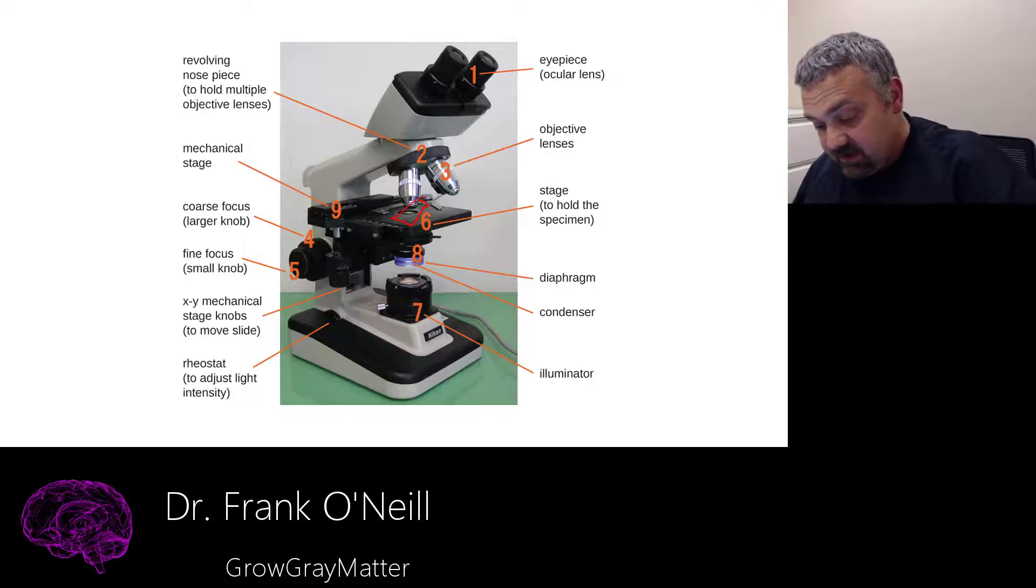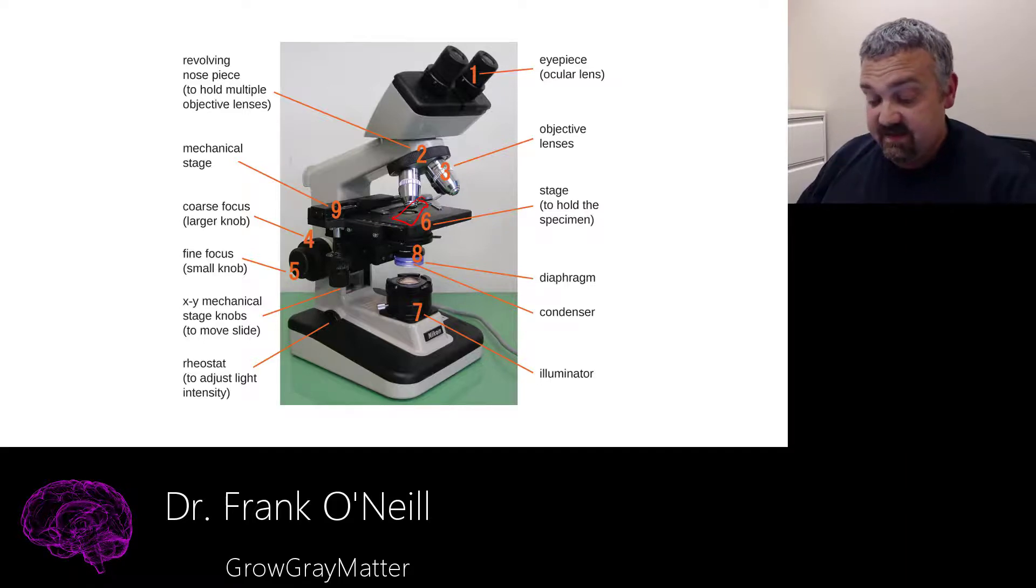Number eight is, as you can see here, a couple of things are pointing here, the condenser and the diaphragm. So the condenser is going to condense the light from the light source. And the diaphragm will allow you to open and close the aperture to determine how much light will enter the stage and the specimen.